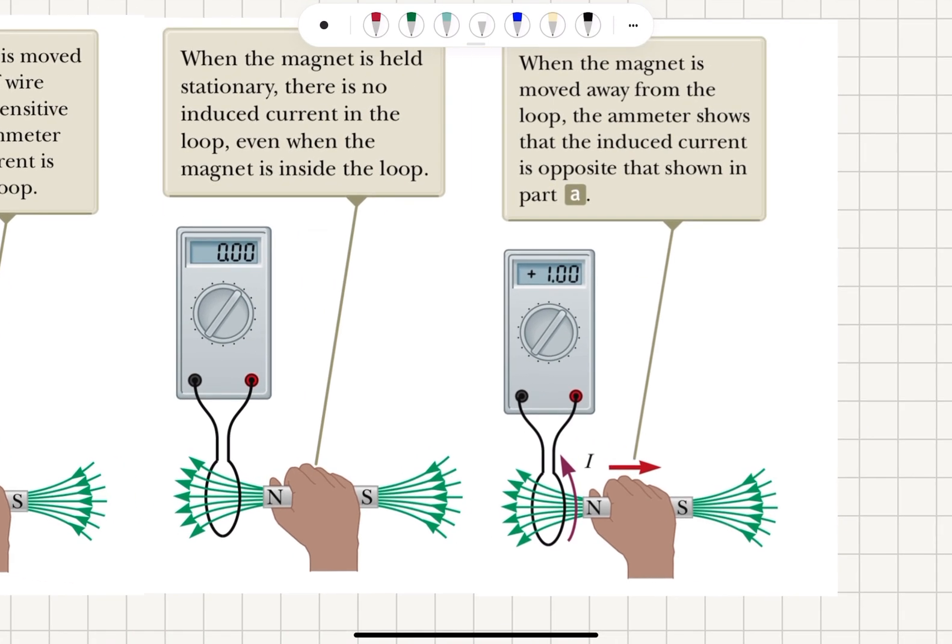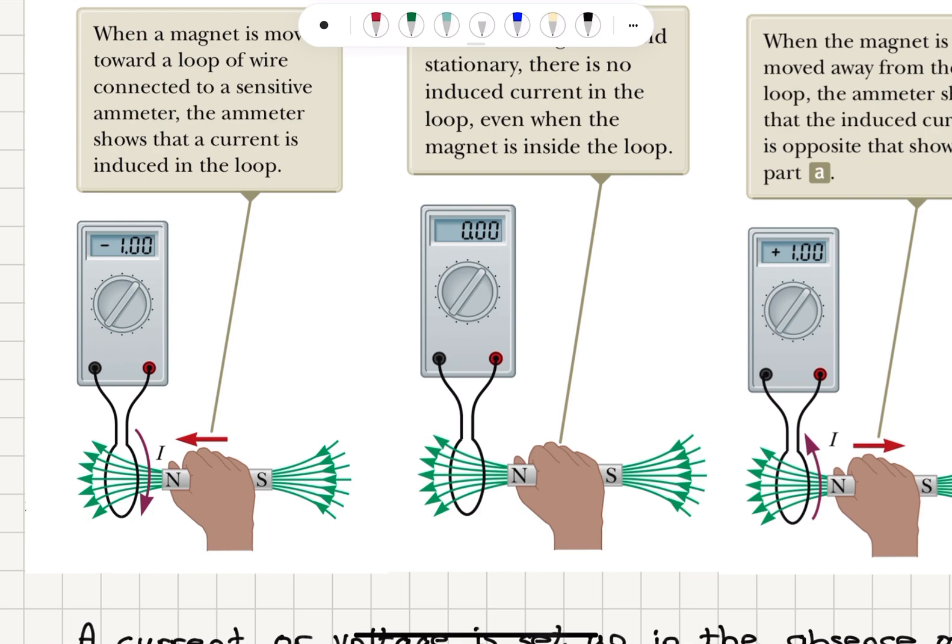But if we move the magnet in the opposite direction, then we see that there will be a current which will be produced in the loop with opposite polarity. When the magnet is moved away from the loop, the ammeter shows that the induced current is opposite to that of the situation when the magnet was approaching.